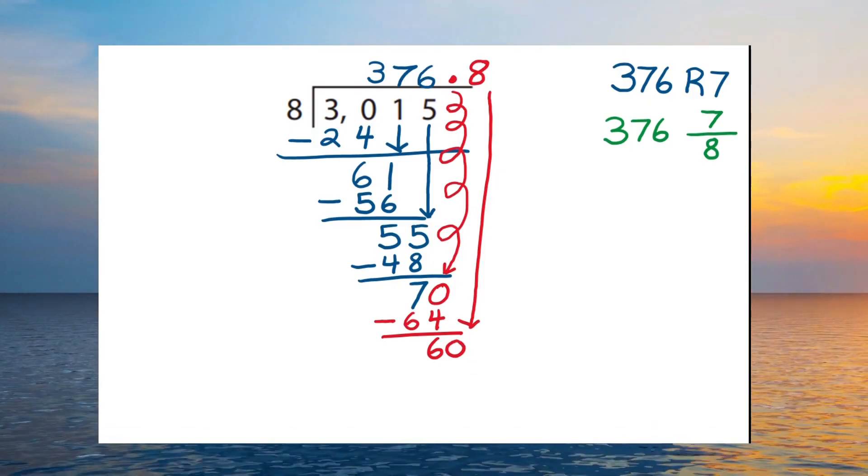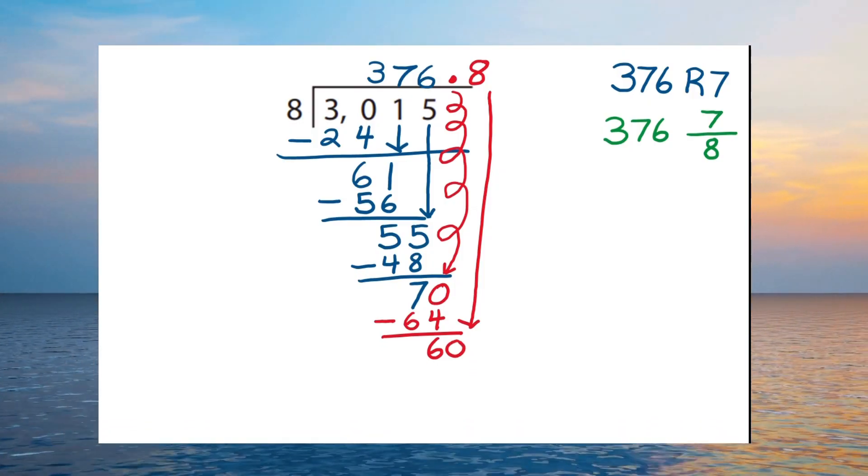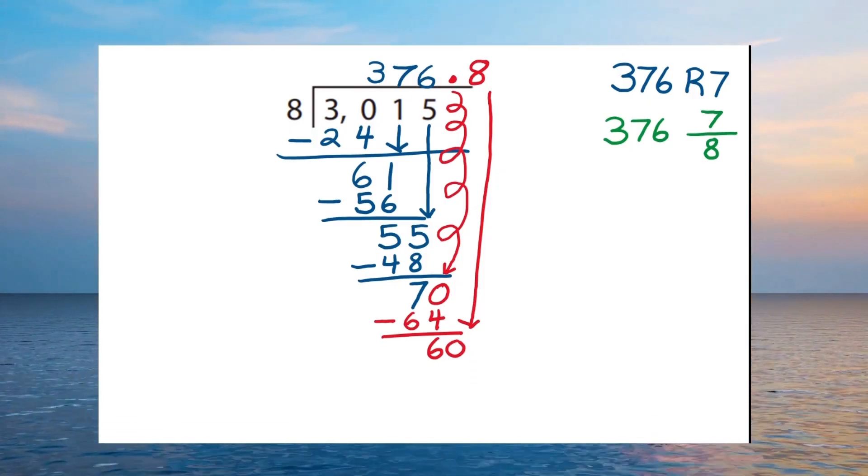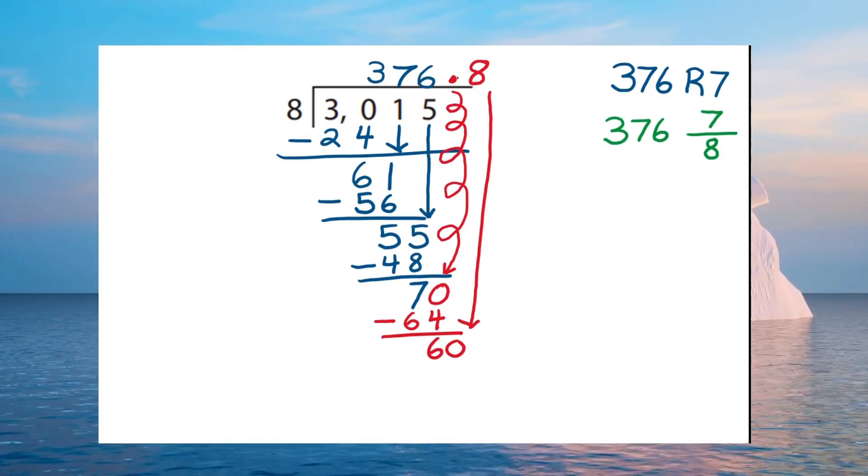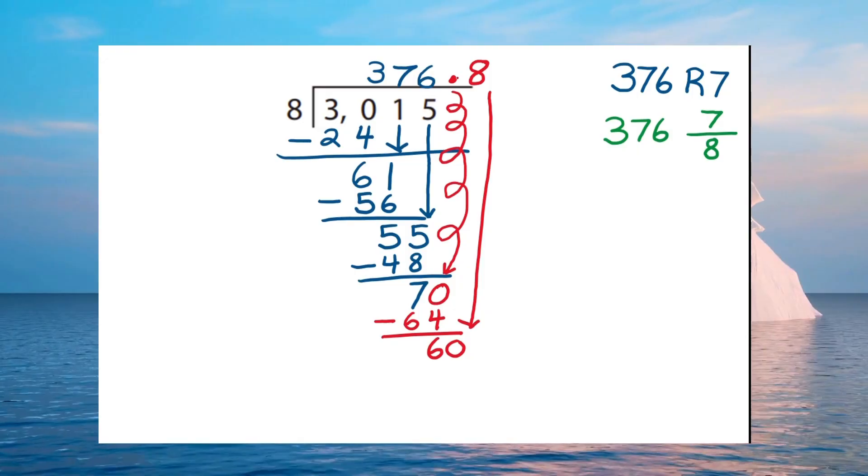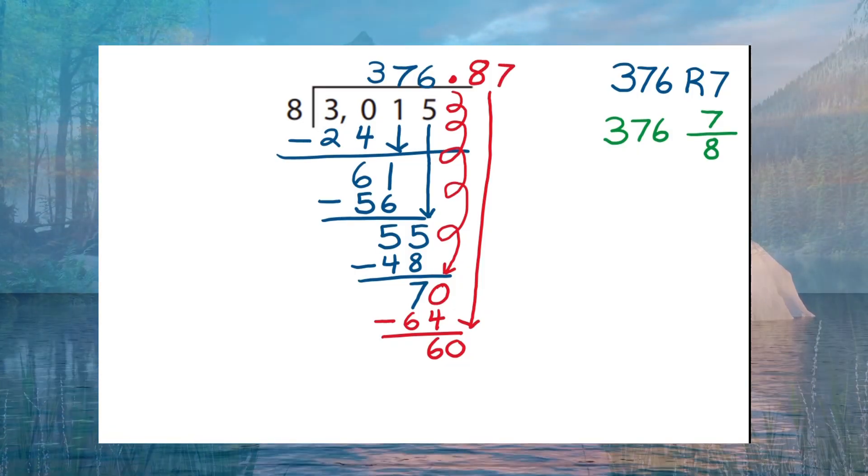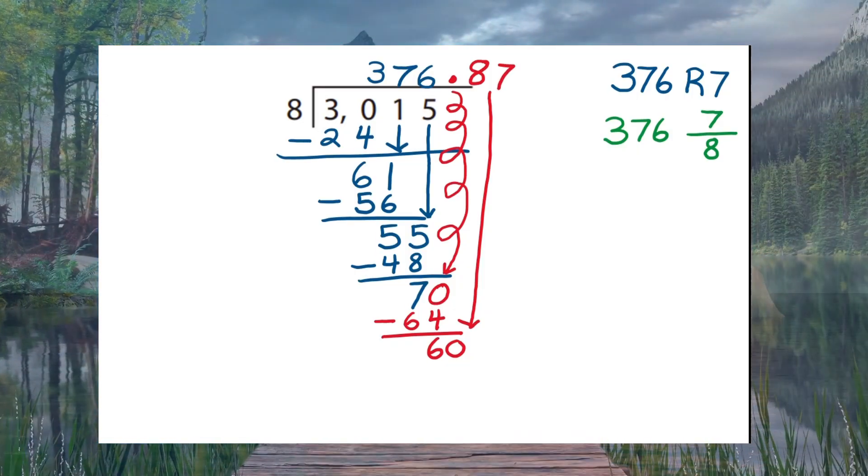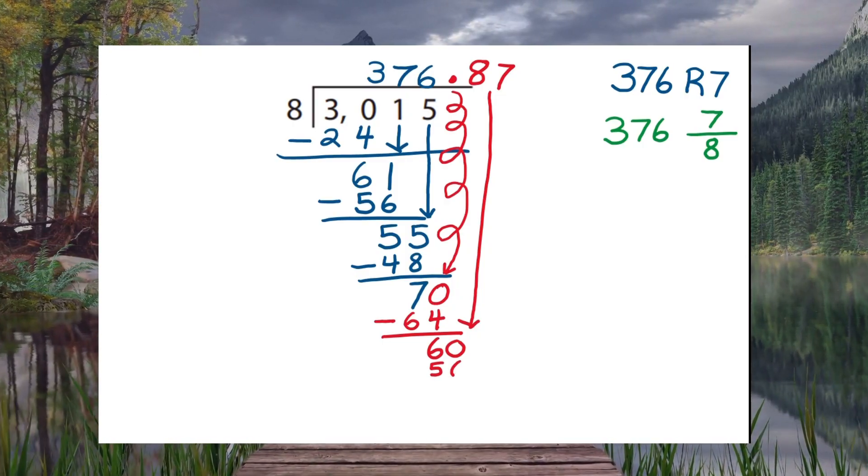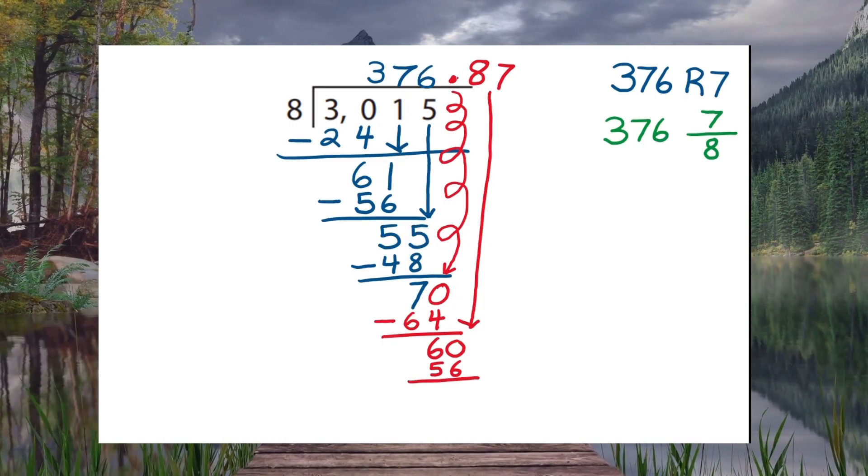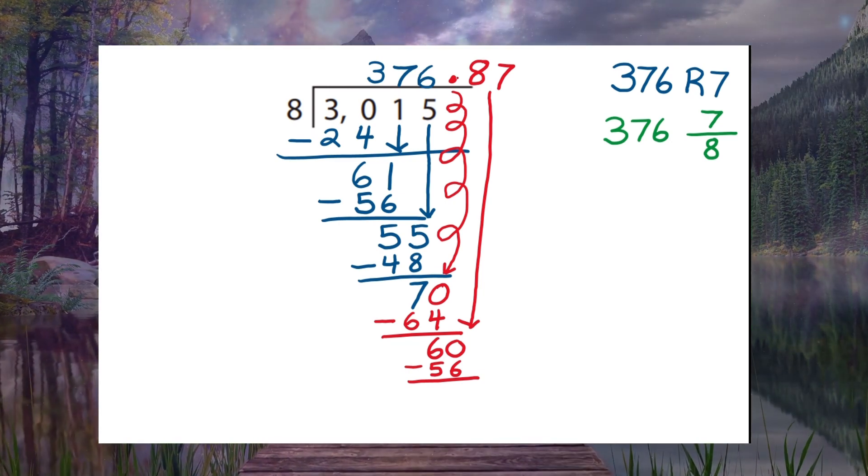On our quest to move towards the thousandth place, we ask ourselves, how many times will eight go into sixty without going over? And we answer with one voice, it will go seven. Because seven times eight is fifty-six. And if we decrease sixty by fifty-six, we come up with four.